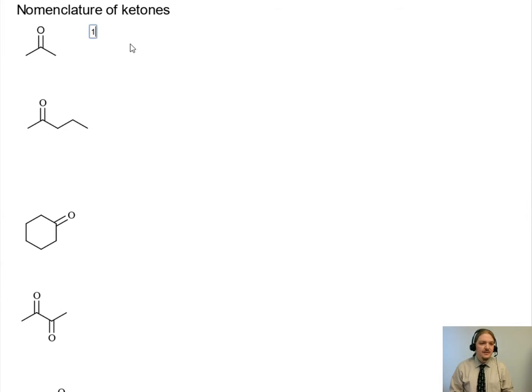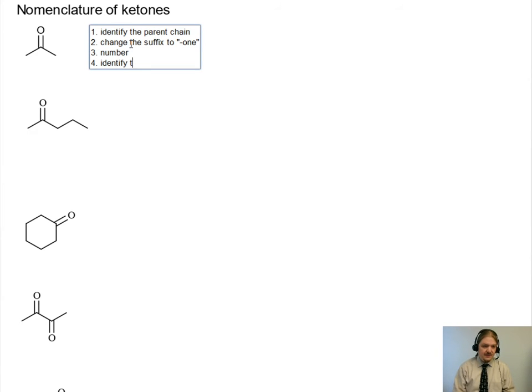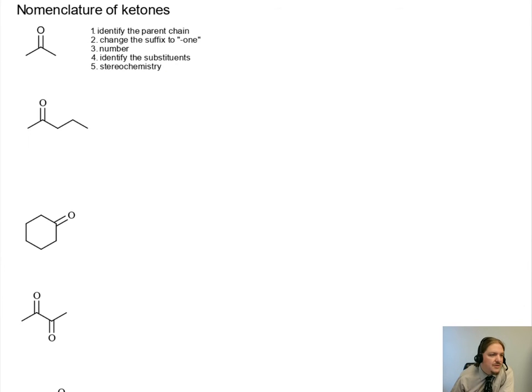As a reminder of our nomenclature process, we want to first identify the parent chain. For ketones, ketones change the suffix to own. And then we number the chain as needed. And if we have any substituents, we identify the substituents. And if needed, we provide any stereochemistry or stereochemical descriptors.